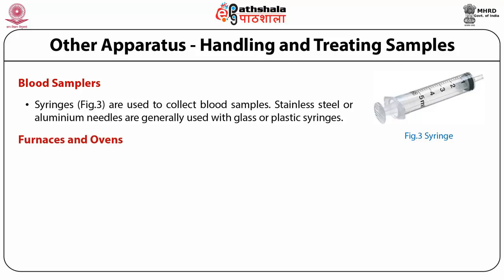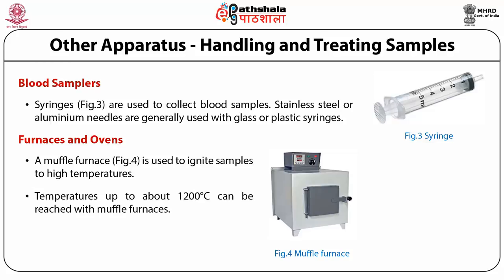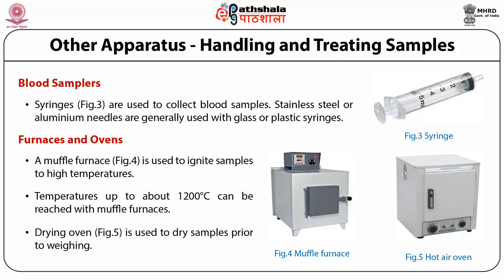A muffle furnace is used to ignite samples to high temperatures, either to convert precipitates to a weighable form or to burn organic materials prior to inorganic analysis. There should be some means of regulating temperature, since losses of some metals may occur at temperatures in excess of 500 degrees centigrade. Temperatures up to about 1200 degrees centigrade can be reached with muffle furnaces. A drying oven is used to dry samples prior to weighing. These ovens are well ventilated for uniform heating; the usual temperature employed is about 110 degrees centigrade, but temperatures of 200 to 300 degrees centigrade may be obtained.